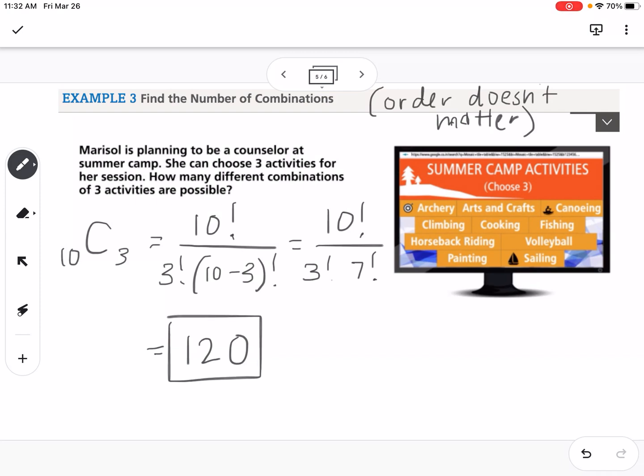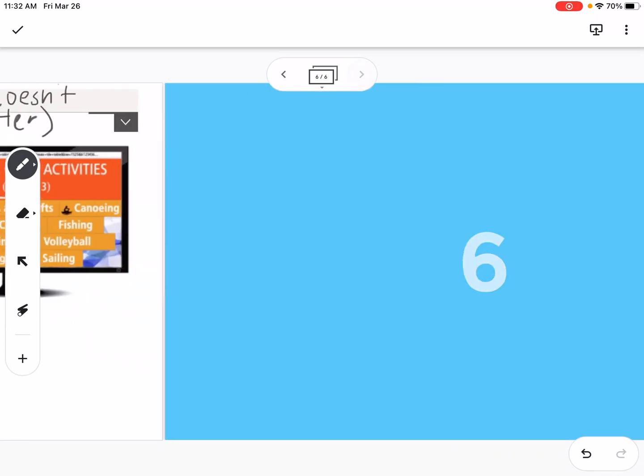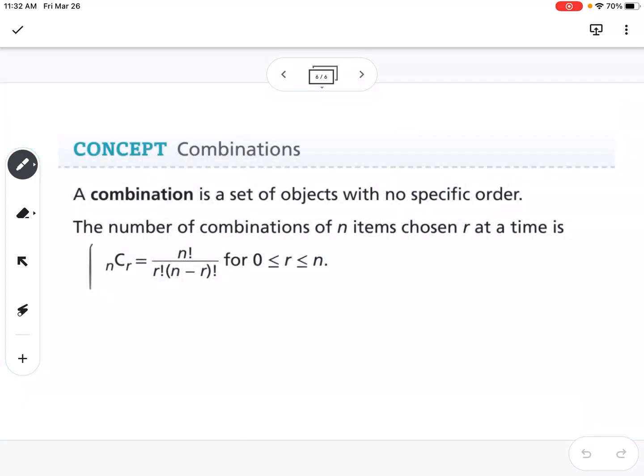Because order doesn't matter, if you're comparing the same thing—like if you compare the number of combinations of three out of this group versus the number of permutations of three out of this group—you're going to have a lot more permutations than combinations. Finally, this is just summarizing what we talked about. Here is our formula for combinations. Let me know if you have any questions.